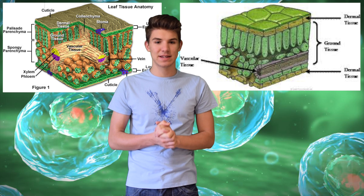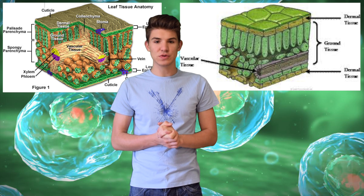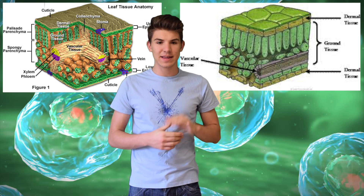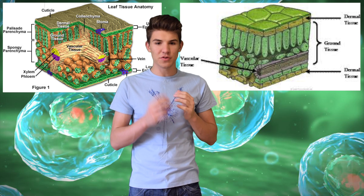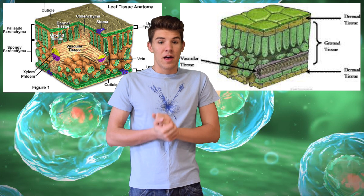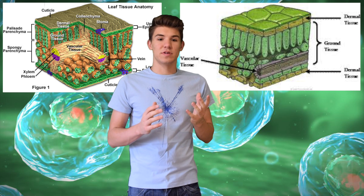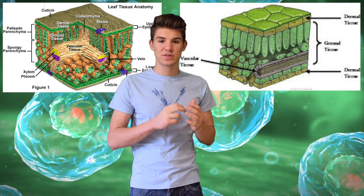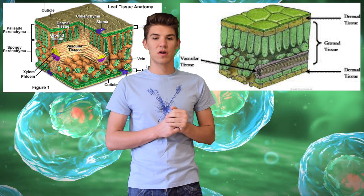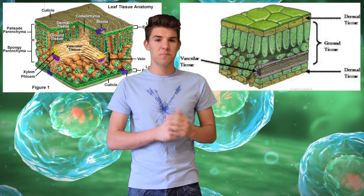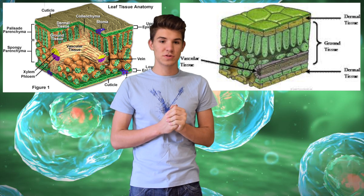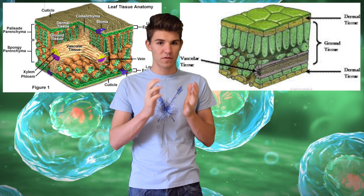The last type is the sclerenchyma tissue, which is used as rigid support for protection. They generally have little organelles and look like sticks because they are made for protection. Some textbooks also say that tracheids, which is a type of water conducting cell, and vessels are a part of the sclerenchyma tissue. But not all textbooks say this, so whichever one your teacher told you to follow, follow that one.